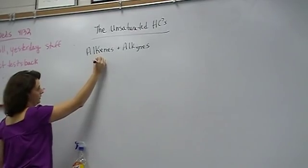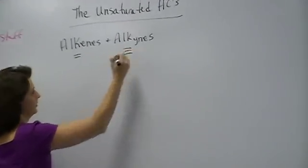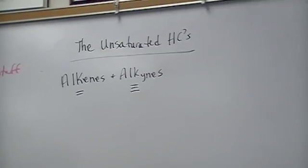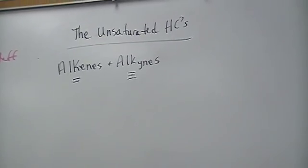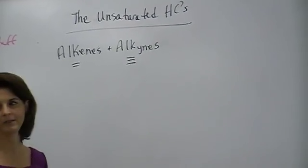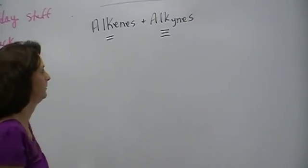These guys are the alkenes and alkynes. Alkenes have double bonds, alkynes have triple bonds. They're kind of similar, that's why they're in the same chapter. And I want to show you how to name them. It won't be too tough, hopefully if you understand how to name the alkanes.